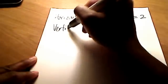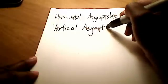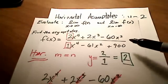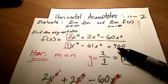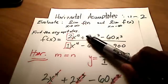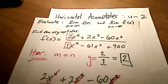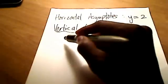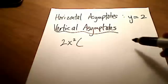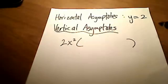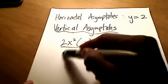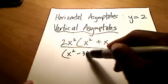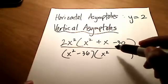Now, what about the vertical asymptotes for this same problem? To find them, I go back to the original function and find what values of x make the denominator equal to 0. It's not immediately obvious, but if I factor everything as much as possible — the numerator terms all share a 2x squared factor, leaving x squared plus x minus 30, and the denominator factors into x squared minus 36 and x squared minus 25.